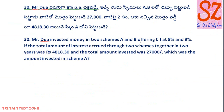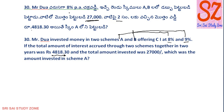Mr. Duha invested money in two schemes A and B offering simple interest at 8% and 9% respectively. If the total amount of interest accrued from the two schemes together in two years was 4818.30, and the rate of interest in scheme A is 8% and B is 9%, what amount did he invest? Both schemes together with 20% — I will explain the problem clearly.